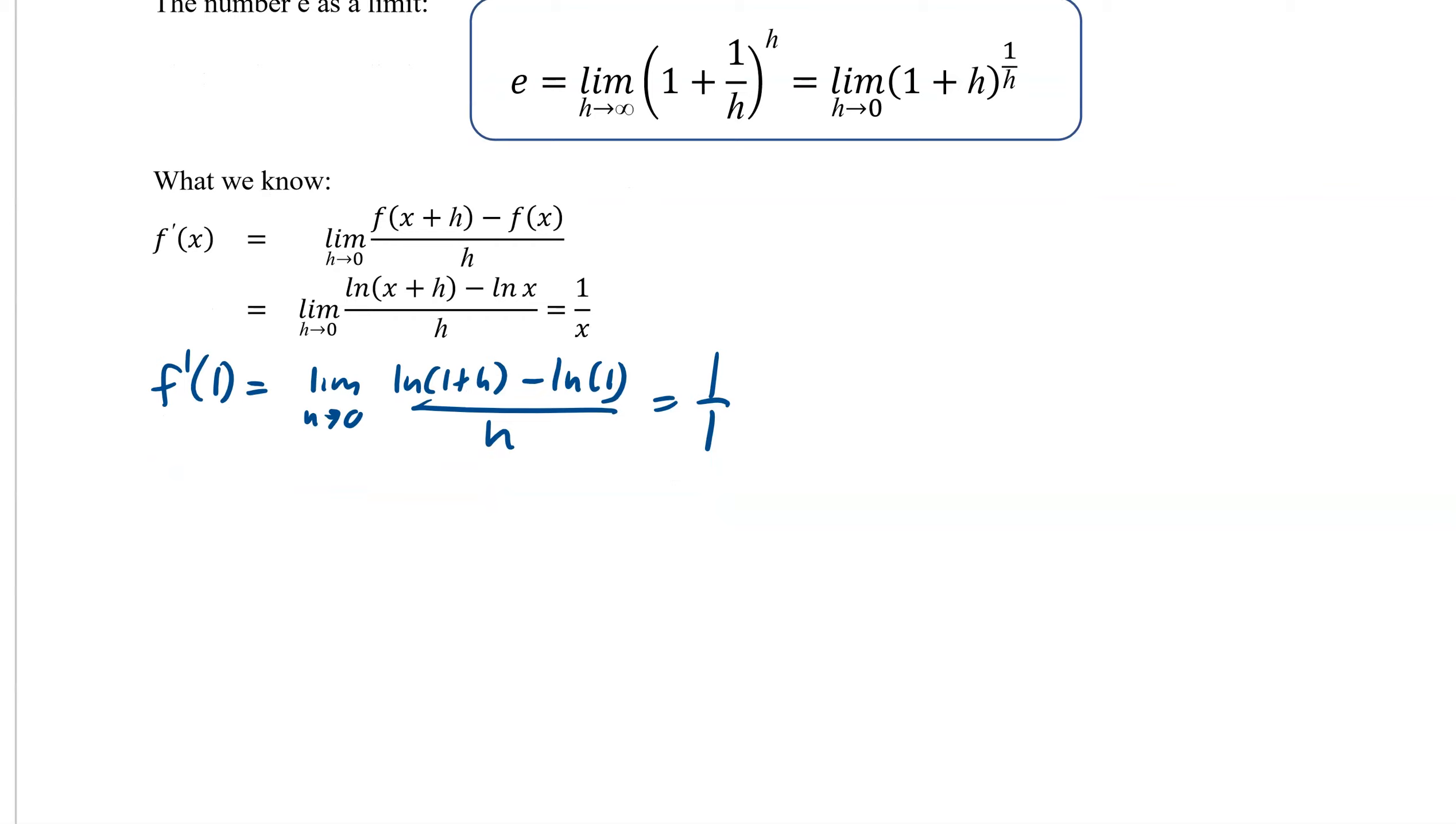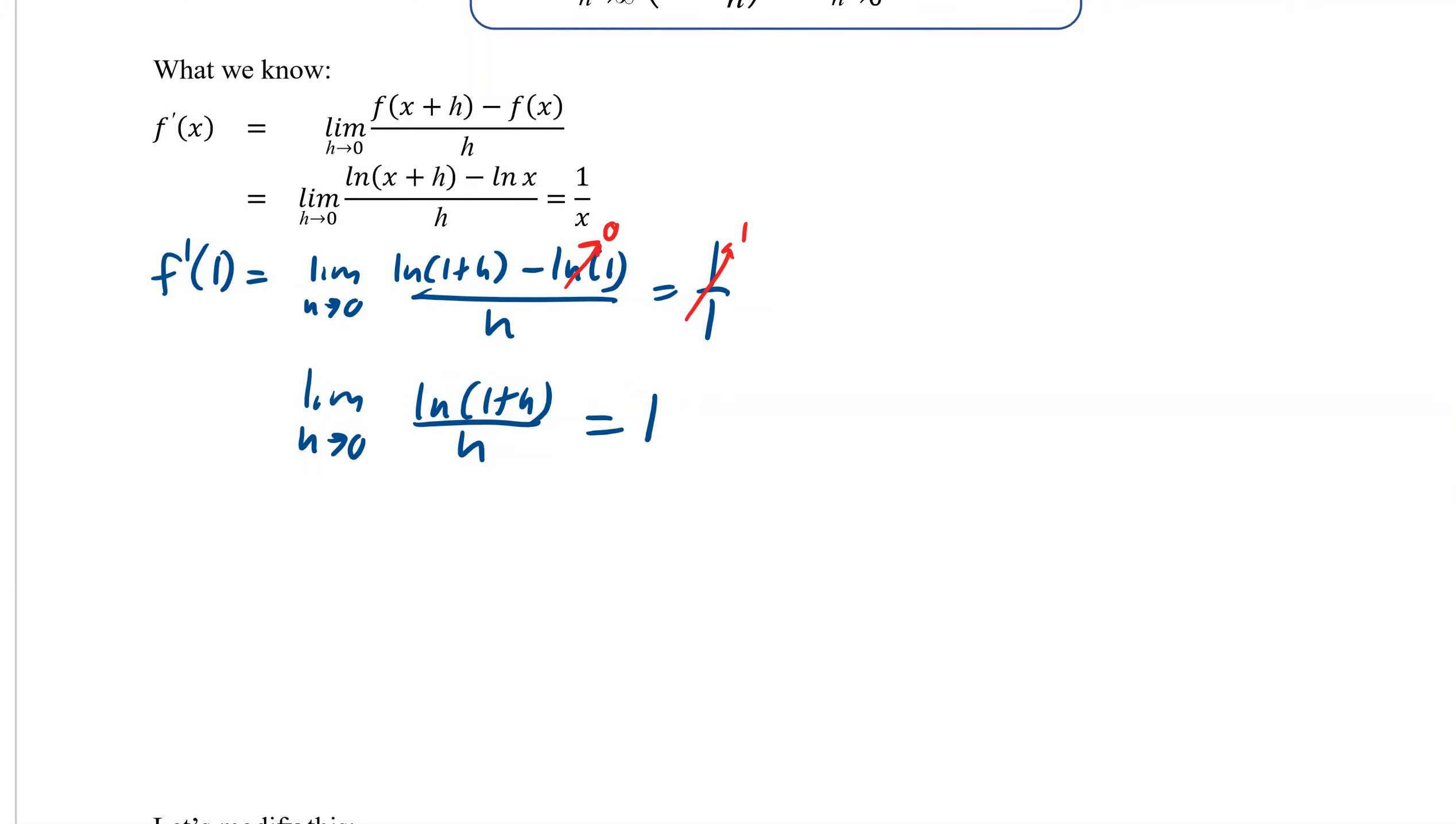So this right here is 0. This is obviously 1. So we end up with the limit as h approaches zero of the natural log of 1 plus h over h equals 1. And then we can even rewrite this again. The limit as h approaches zero of 1 over h, natural log of 1 plus h equals 1. And then we can bring that 1 over h in because it's a natural log. So the limit as h approaches zero of the natural log of 1 plus h to the power of 1 over h.